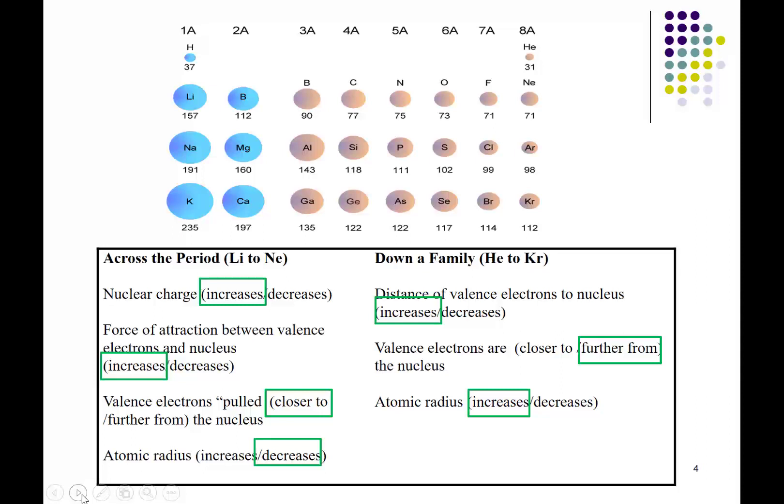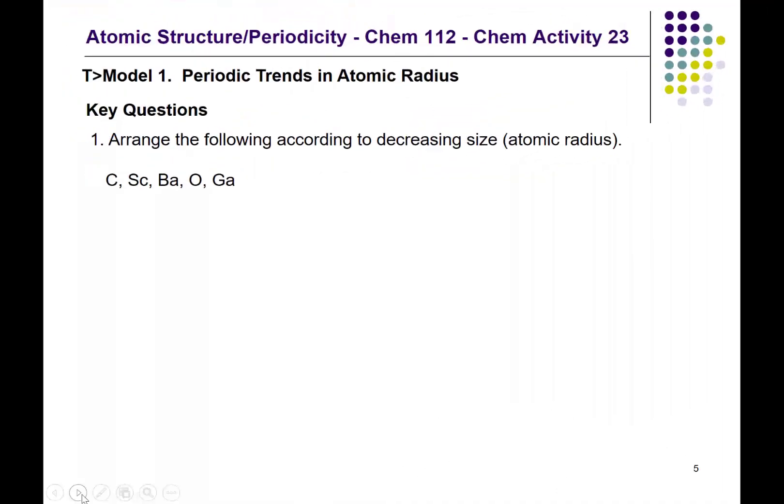Before we look at the other trends, we should look at one other feature concerning atomic radius. We've seen how to state and explain the trend. Now we will see if we can use our understanding to make a prediction about how the trend changes for a series of given elements. This is addressed in the first key question: arrange the following elements according to decreasing size. You do not need to know the actual values of the atomic radius, but simply understand the trend.